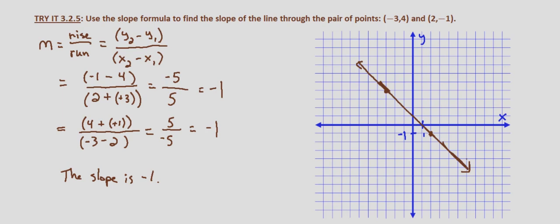Now we can pick any 2 points that we want on there, but we'll go ahead and we'll choose our 2 points: negative 3, 4 and 2, negative 1.